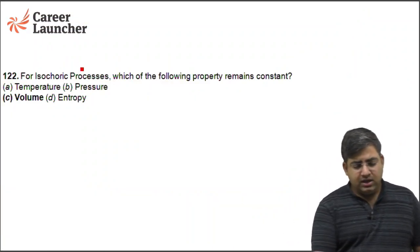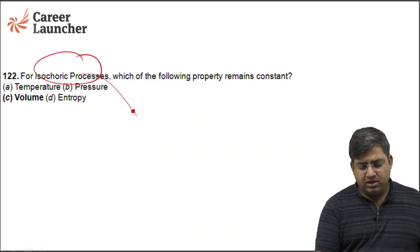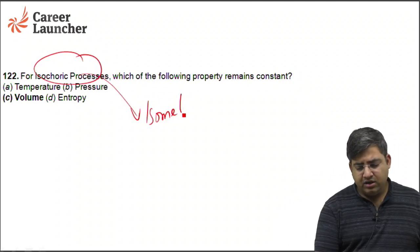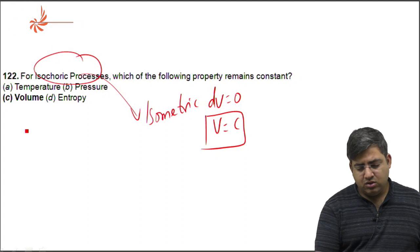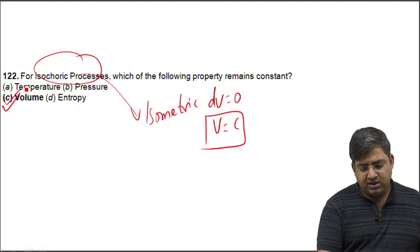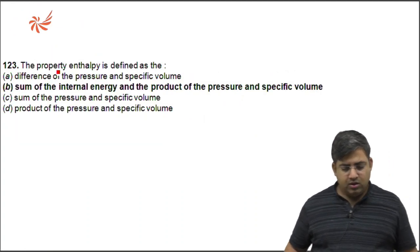The next question is about isochoric. The other name for isochoric is isometric process, in which the change in volume equals zero, or volume is constant. The right answer is C.